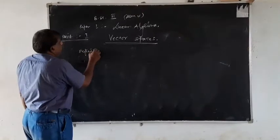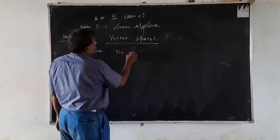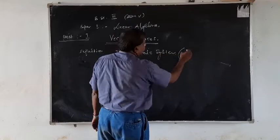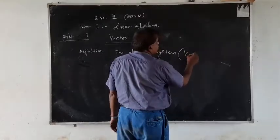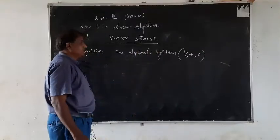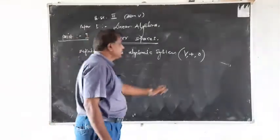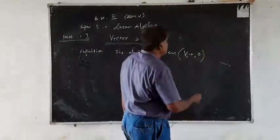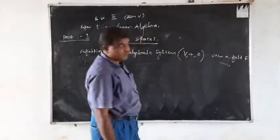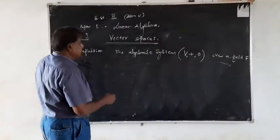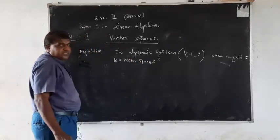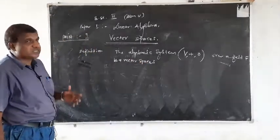The algebraic system V over the operations of addition and multiplication over a field F is a vector space which satisfies different properties.